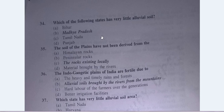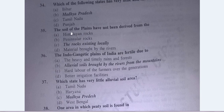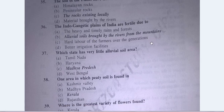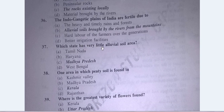Question No. 34: Which of the following states has very little alluvial soil? The answer is B — Madhya Pradesh. Question No. 35: The soils of the plains have not been derived from the rocks existing locally. The Indo-Gangetic plains of India are fertile due to — answer is B — alluvial soil brought by the rivers from the mountains. Question No. 37: Which state has very little alluvial soil area? The answer is Madhya Pradesh.